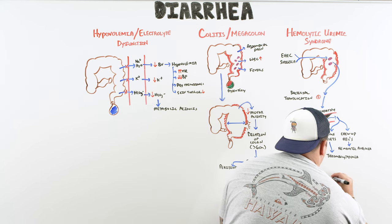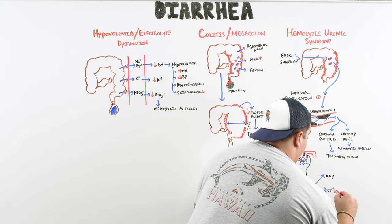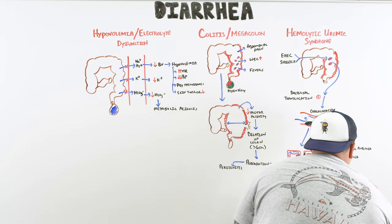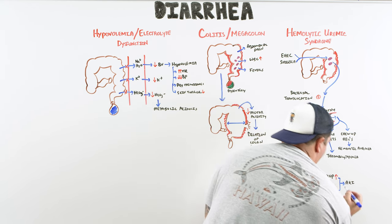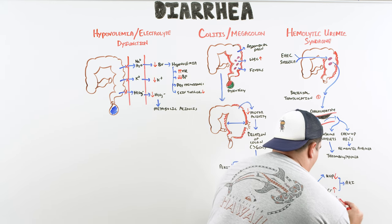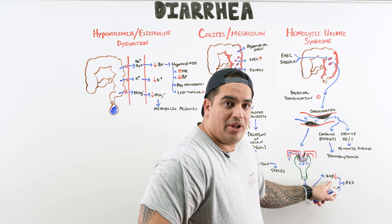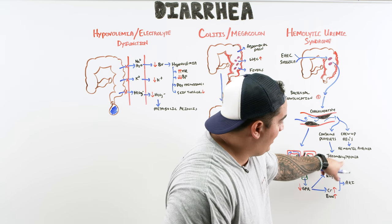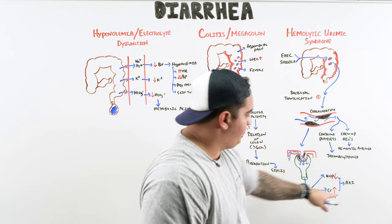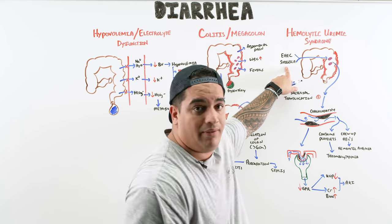The result is an acute kidney injury: rising creatinine, rising BUN, and decreased urine output. Combined with thrombocytopenia and hemolytic anemia, this is the classic triad of hemolytic uremic syndrome. In the setting of EHEC or Shigella infection, these three findings equal HUS.